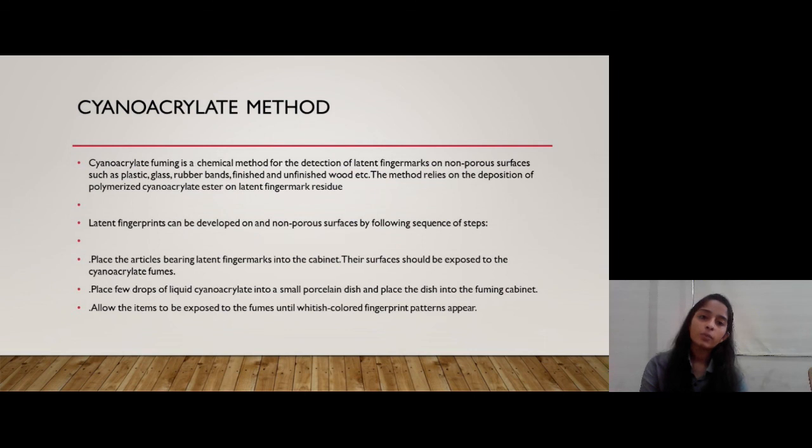This is cyanoacrylate method. This method differs a little bit than all the three methods that we have discussed before. Cyanoacrylate method includes fuming. Cyanoacrylate fuming is a chemical method for detection of latent fingerprints on non-porous surfaces such as plastic, glass, rubber bands, finished and unfinished works. These kinds of textures are used. Usually, for all the latent fingerprints, we use these surfaces only. We can detect fingerprints from these surfaces. The method relies on the deposition of polymerized cyanoacrylate ester on latent fingerprint residue. Latent fingerprints can be developed on non-porous surfaces by following sequence steps.